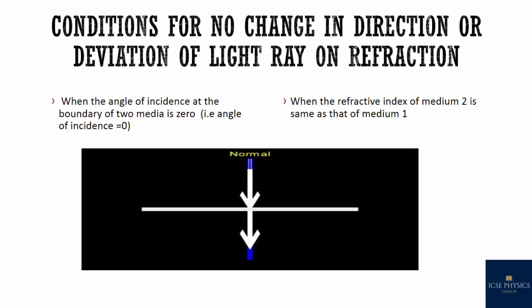Now, conditions when there is no change in direction of the light ray. When the angle of incidence at the boundary of the two mediums is 0°, or light hits at exactly 90° to the surface, it passes undeviated. The second case where there is no change is when the refractive index of the second medium is the same as the first — if both mediums have a refractive index of 1.33, there is no change in direction.